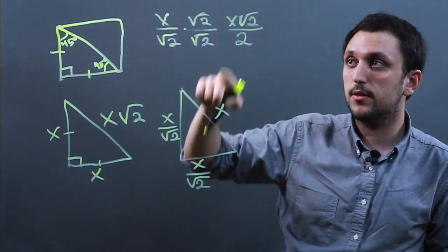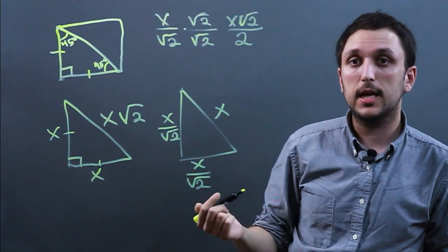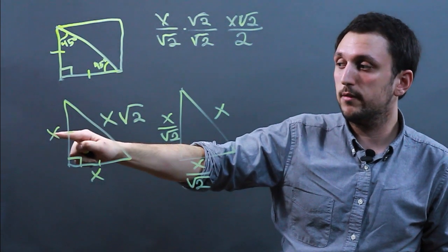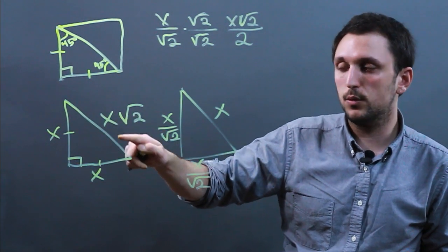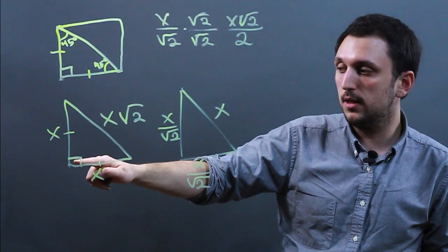So you can also call these sides x root 2 over 2. But again, the side ratio is always x to x to x root 2, where x root 2 is opposite the 90 degree angle.